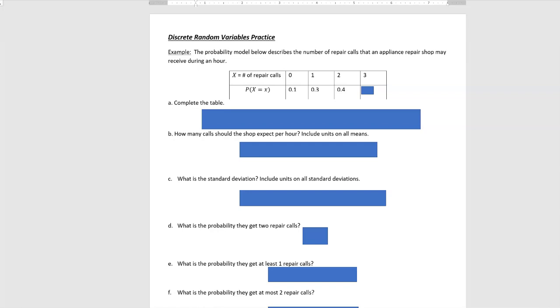to finish completing the table. So when you have a probability distribution, remember that all the probabilities have to add up to one. So all you have to do is take one and subtract the other values to find that the last one must be 0.2, and that's what that calculation looks like.